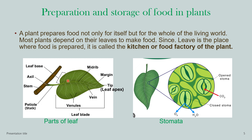The main vein and side veins have tiny tubes inside them — we call them venules. These tubes carry water and minerals to all parts of the leaf, and also transport the food prepared in the leaf to other parts of the plant, nourishing the entire plant.